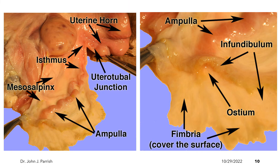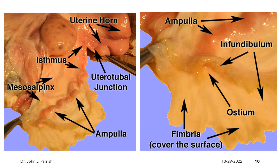The next structure after the uterine horn is the oviducts. The oviducts lie beyond the uterine horns and adjacent to the ovaries. Note that in this slide we have two oviducts. On the left side, we have the presence of the uterine horn. The transition between the uterine horn and the oviduct is the uterotubal junction. After that we have the isthmus, the ampulla, and the infundibulum. The broad ligament that supports the oviduct is the mesosalpinx.